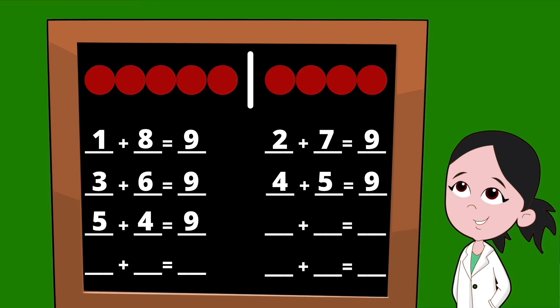Let's go ahead and slide that line over one more dot. To the left of our line, we now have six dots, so we're going to start our partners with the number six. To the right of our line, we have just three dots, so our second partner is the number three. Six plus three equals nine.